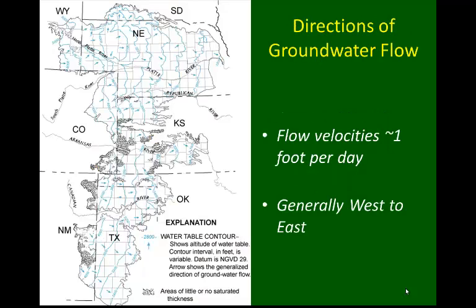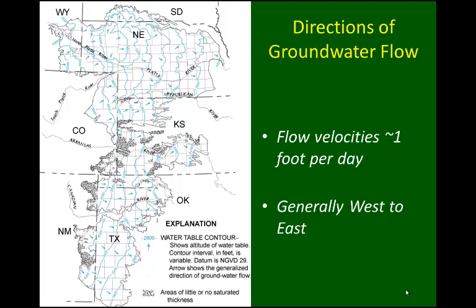We can also look at the general direction of groundwater flow across the aquifer. The flow velocities are fairly low — about one foot per day — much slower than we see in most of the rivers that move over the aquifer. Generally, there is a west-to-east direction of movement of groundwater, as the highest water table elevations are on the western side and the lowest water table elevations tend to be on the eastern side of the aquifer.